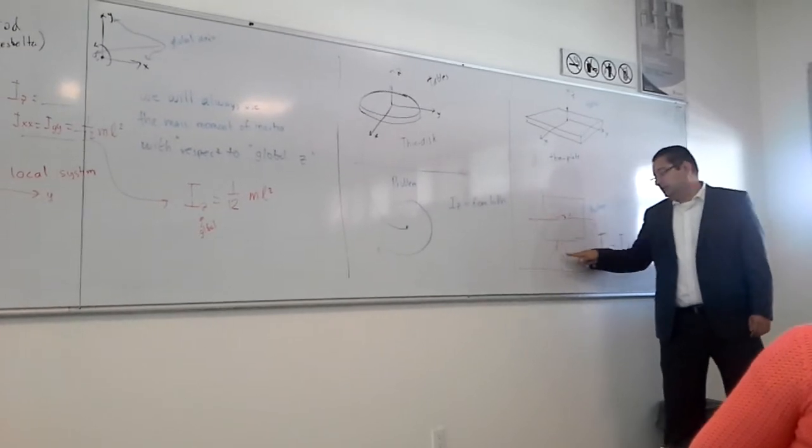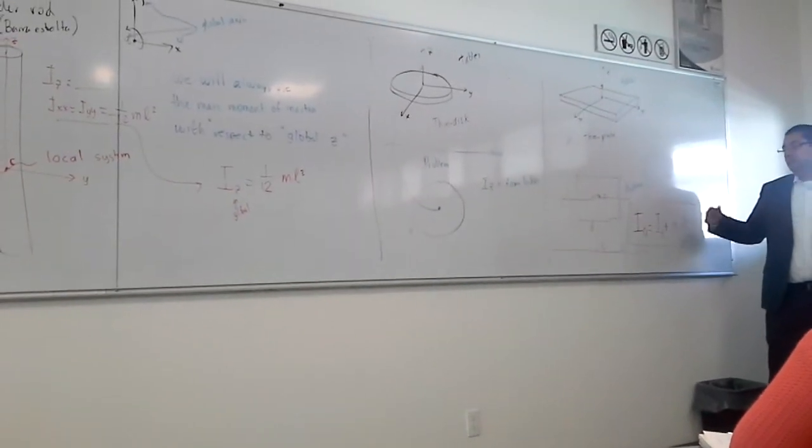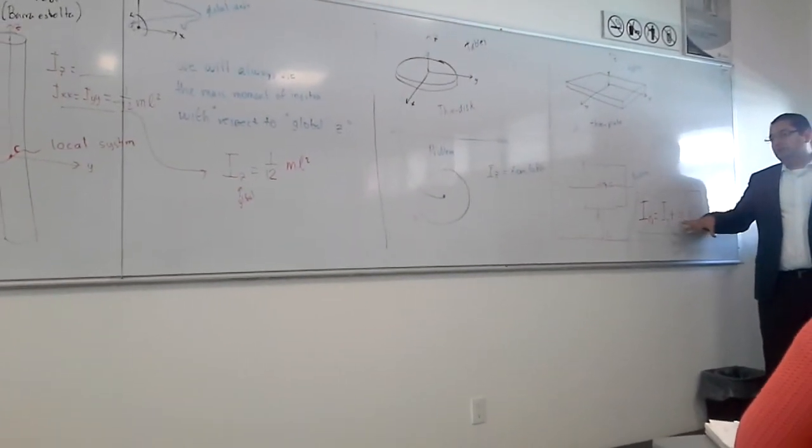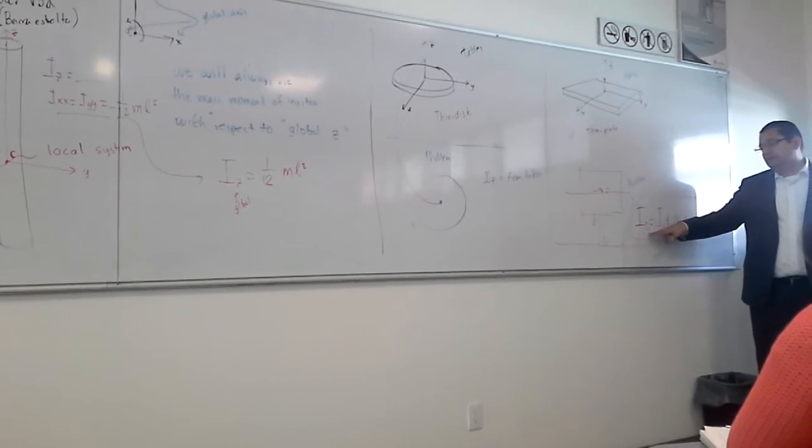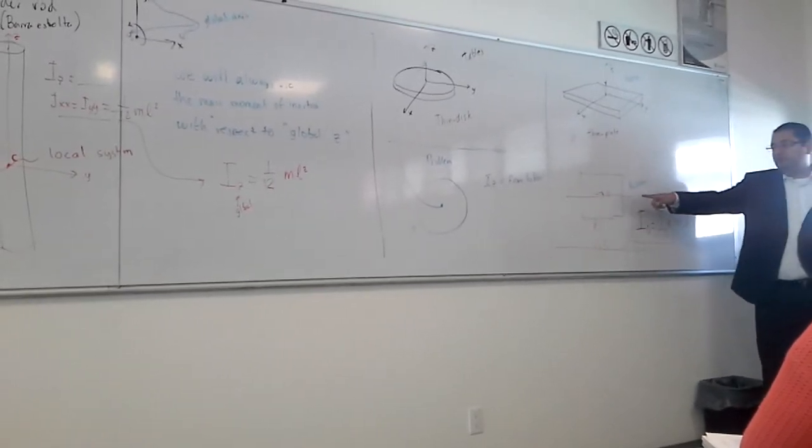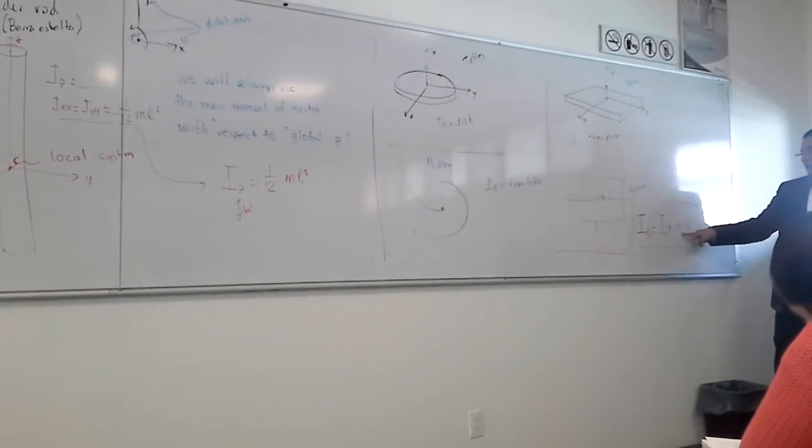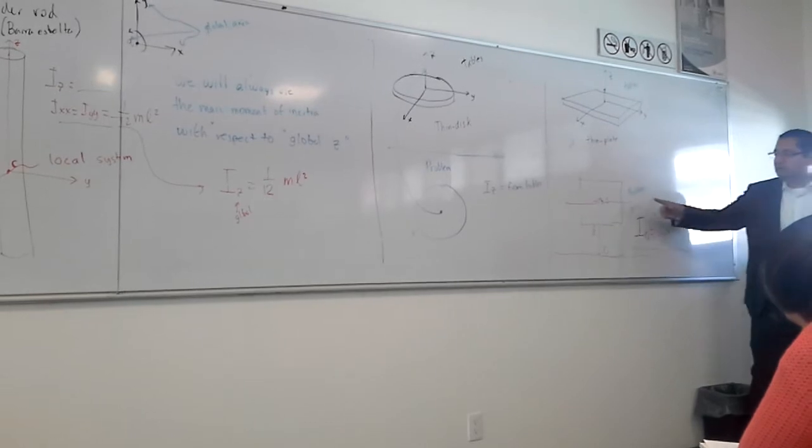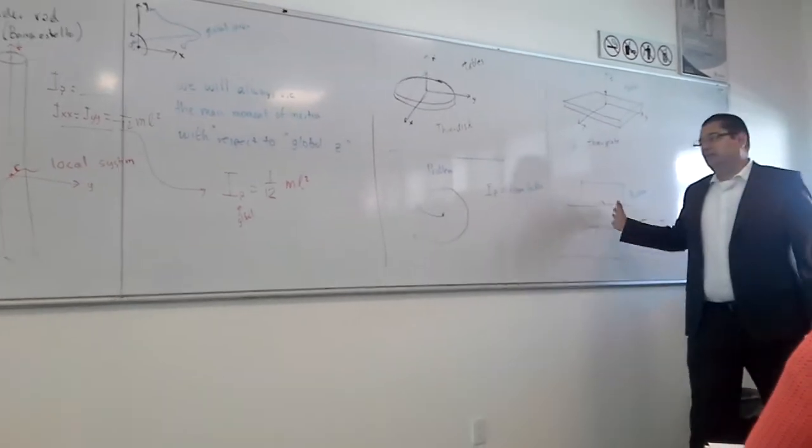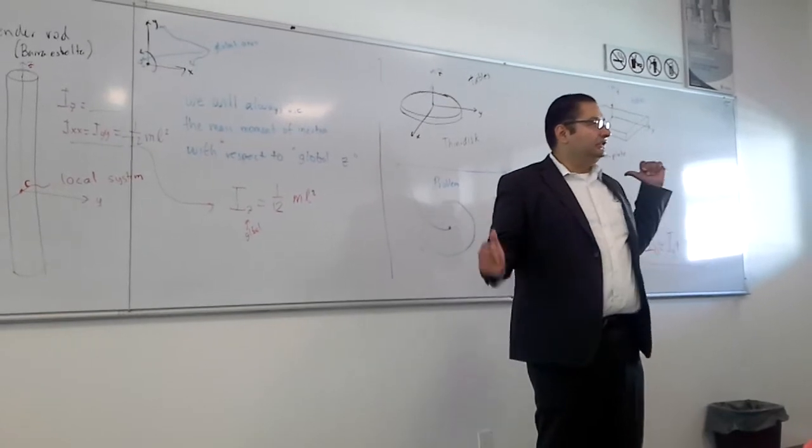Recalling from statics, the formula for the parallel axis theorem adapted to dynamics is something like this: the new mass moment of inertia with respect to O equals the mass moment of inertia with respect to the mass center plus the mass times the square of the distance. That's a simple concept from statics that we apply here in dynamics.